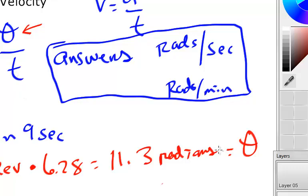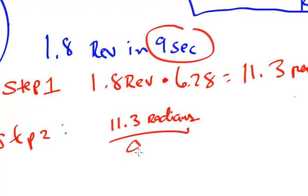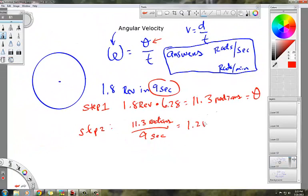Now, step 2, after we get that, we take 11.3 radians and divide it by the time interval, because that's theta over t. The time interval was 9 seconds, so we'll put that on the bottom, and we just divide it top to bottom. 11.3 divided by 9 is somewhere around 1.26, and then what unit would go on that? Radians per second, excellent.